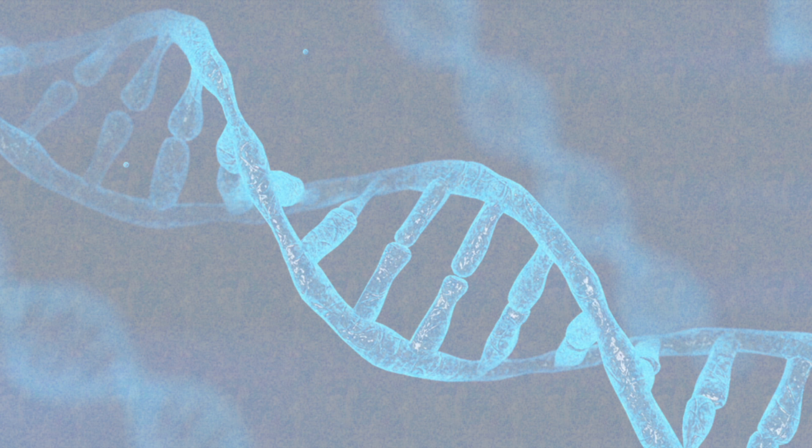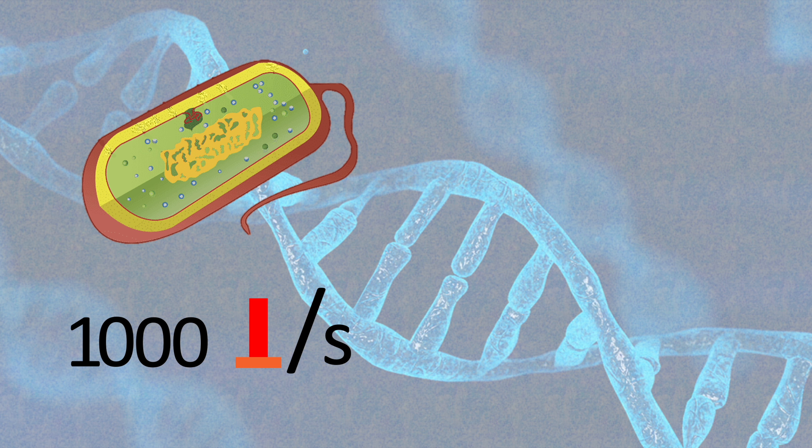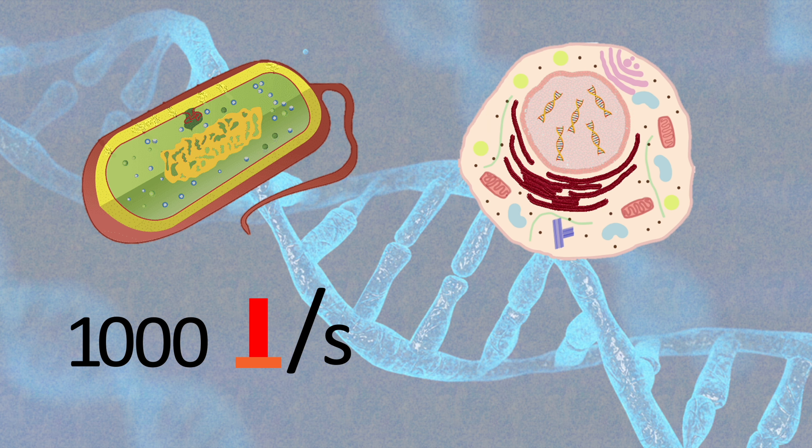Now you may want to know how long this process takes. It depends on the organism. For example, bacteria replication can occur at a rate of 1000 nucleotides per second. In contrast, human DNA replication occurs at a rate of 50 nucleotides per second.